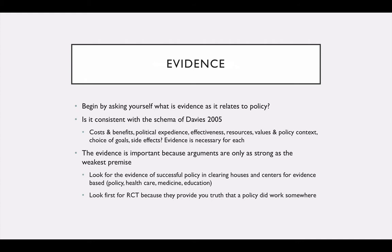The evidence is important because arguments are only as weak as the weakest premise. If you remember from your evidence-based policy readings, one of the primary things that you were supposed to take away from that was that for every argument, it has a premise. And the premise must be true. And for each premise, there's usually sub-premises. And for the sub-premises, there are sub-sub-premises. And those must all be true.